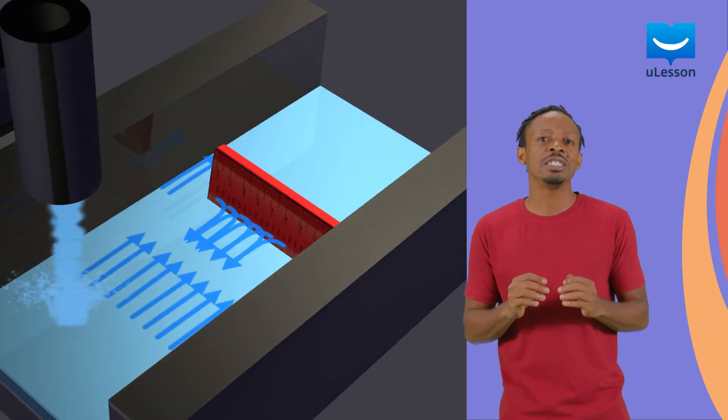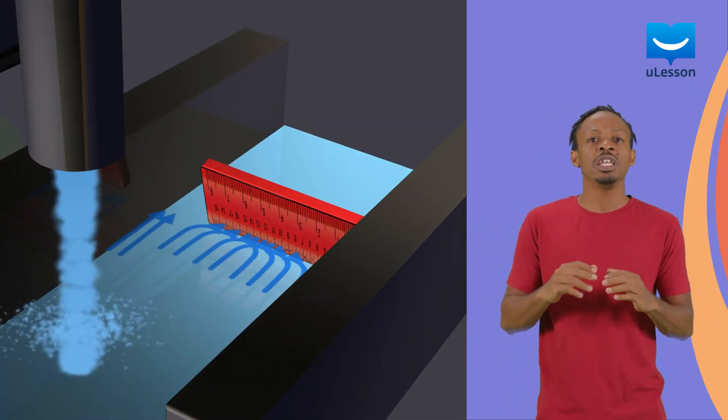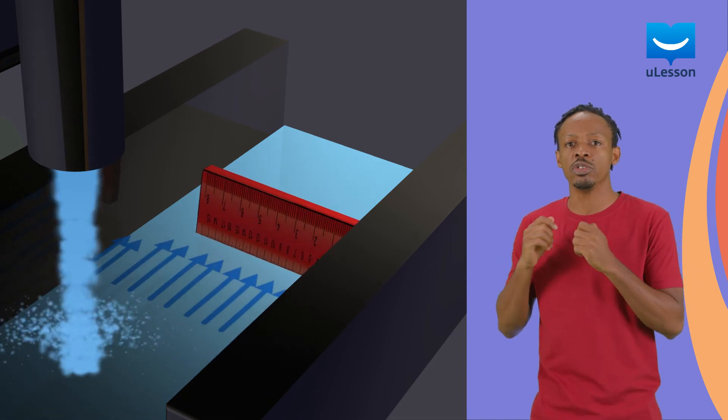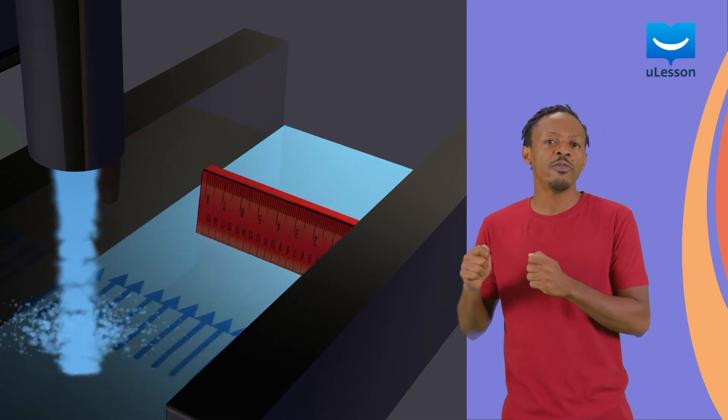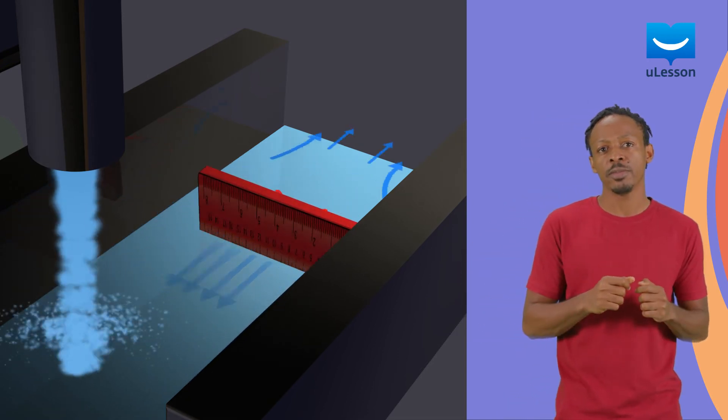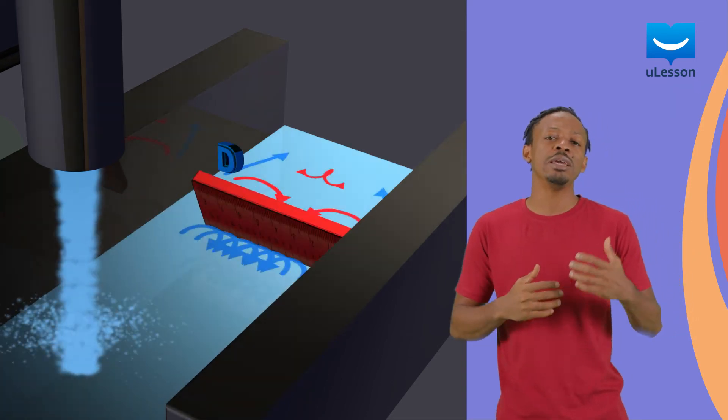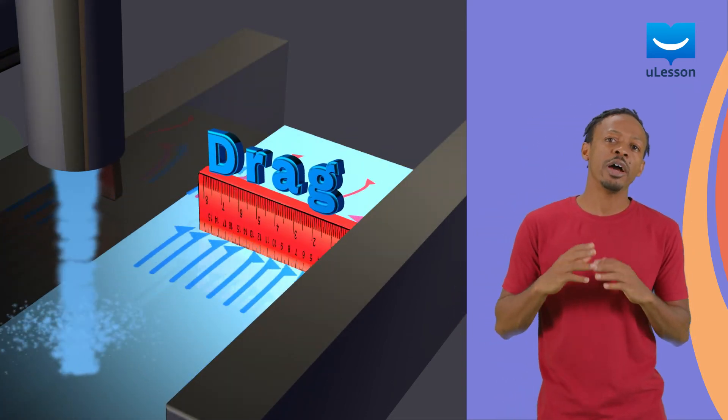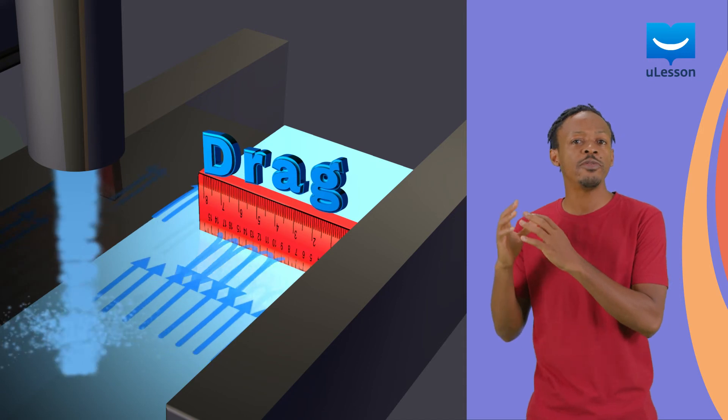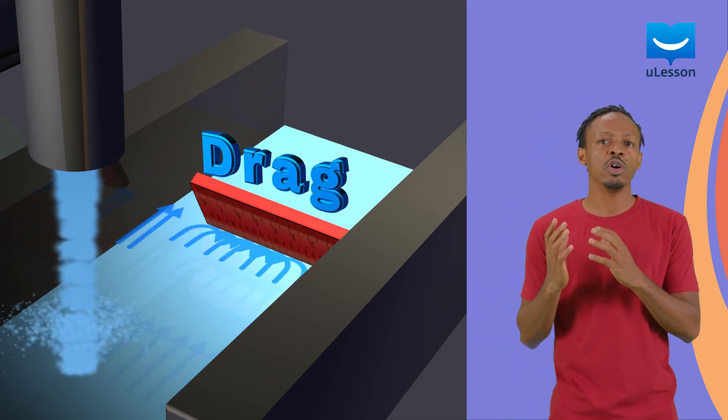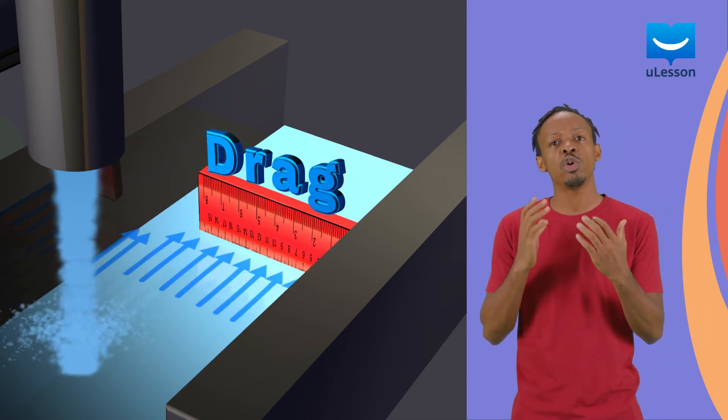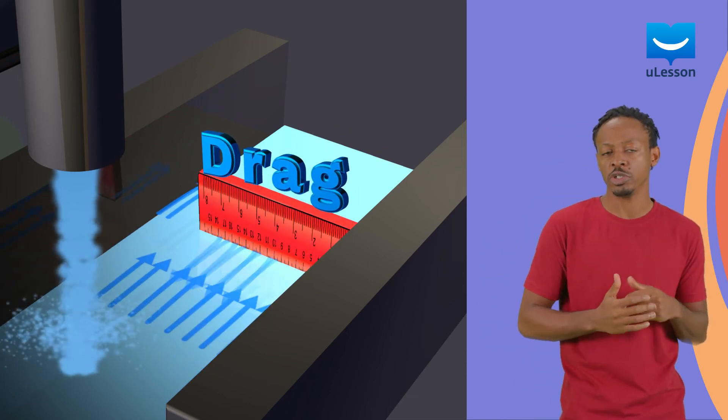The second effect is that the force of the water is felt more strongly on the ruler. The ruler feels dragged back. And this is how we got the name drag. Drag happens because fluid friction pulls solid objects in the direction opposite to that of their relative motion.